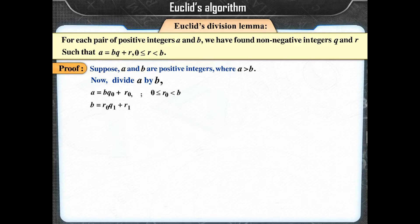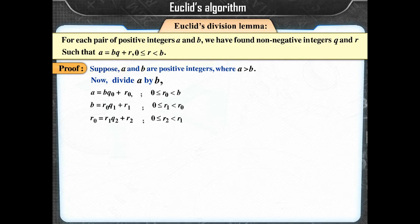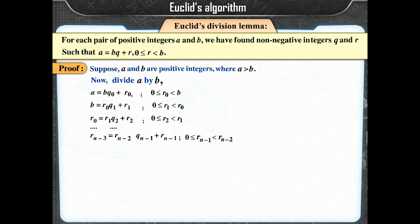Continuing successive divisions: B = R0·Q1 + R1, where 0 ≤ R1 < R0. R0 = R1·Q2 + R2, where 0 ≤ R2 < R1. This continues up to Rn−3 = Rn−2·Qn−1 + Rn−1, where 0 ≤ Rn−1 < Rn−2.